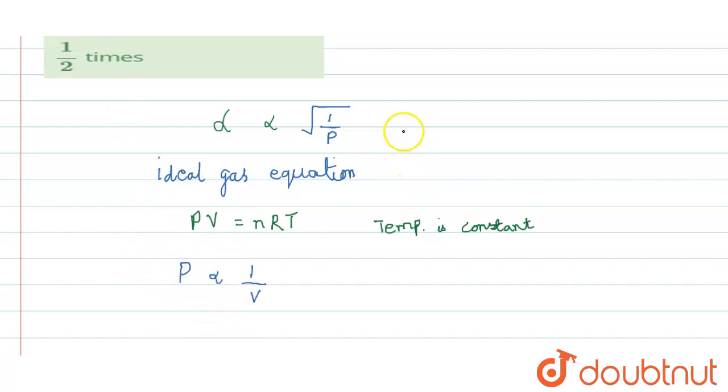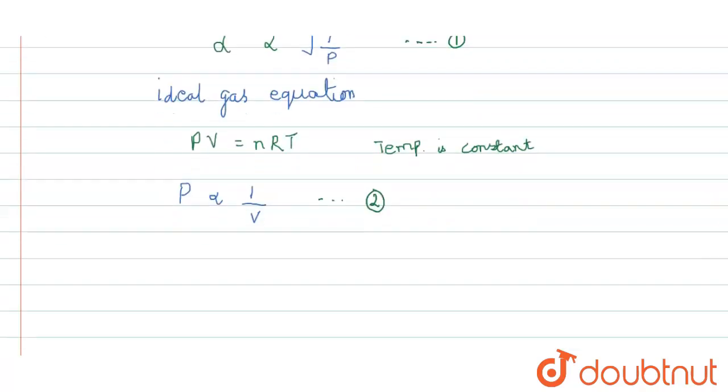Let us consider this as equation one and this one as the second equation, two. Now, considering these two equations, we derive at the equation that degree of dissociation, that is alpha, is directly proportional to square root of volume.